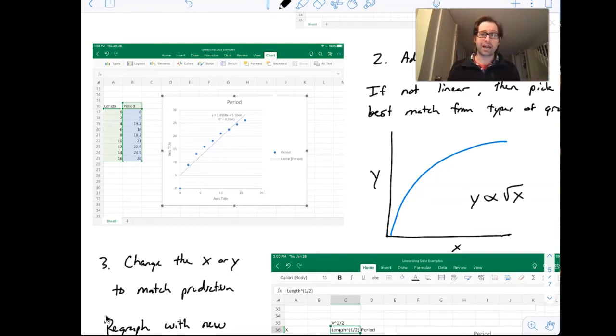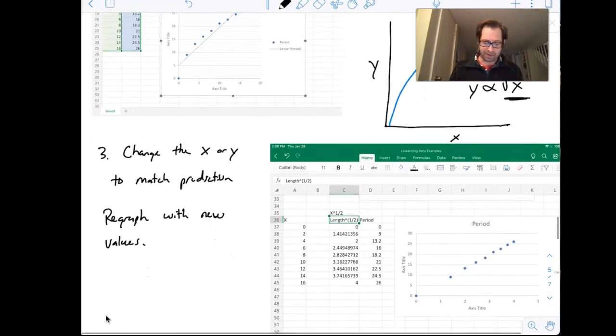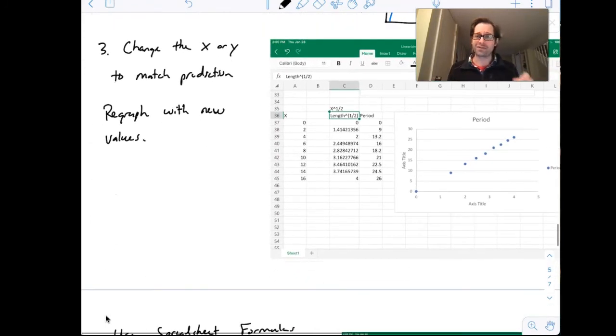I'm going to then linearize this by adjusting my x values, because I'm predicting my x values are a square root. So what I'm going to do is I'm actually going to change my x values in my spreadsheet and re-graph them. All right, so what I'm doing here, because I think it might be a square root relationship, I am telling the spreadsheet to take whatever values it has in x and actually take the square root of them. And then I'm going to re-graph that with my old y values.